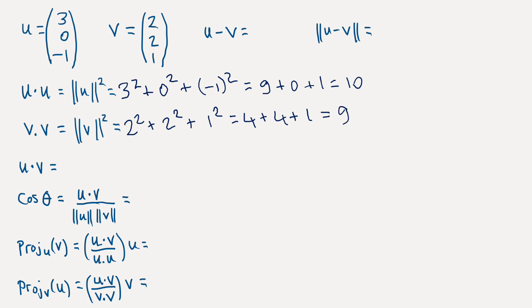Let's take the dot product of u with v now. So that's going to be 3 times 2 plus 0 times 2 plus minus 1 times 1. So that's going to be 6 and 0 and minus 1. So we'll have 5.